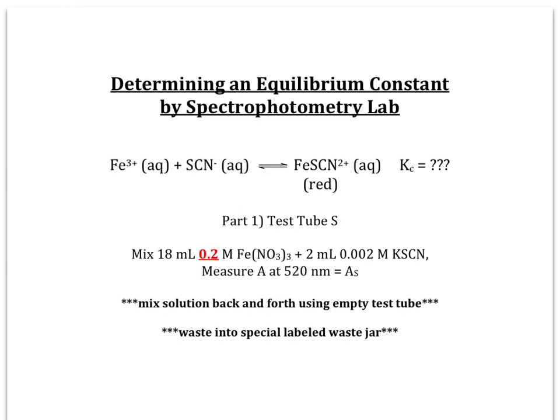This is the procedure for the Determining an Equilibrium Constant by Spectrophotometry Lab. We're going to react Fe3+ ions with SCN- ions, and the product will be FeSCN2+ ions, which have a reddish color. Because they absorb light, we can use the absorbance from the spectrophotometer to give us an indication of how much FeSCN2+ ion is present at equilibrium, and that will allow us, if we do a RICE chart, to figure out the equilibrium constant Kc for the reaction.